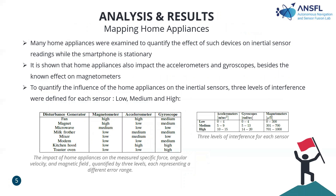For the results: many home appliances were examined to quantify the effect of various devices on the inertial sensor readings while the smartphone was in stationary mode. Some of the home appliances, as you can see in the table, impact the accelerometer and gyroscope in addition to the known effect on the magnetometer. To quantify the influence of home appliances, I consider three levels of interference defined for each sensor: low, medium, and high, as shown in the table on the right side.